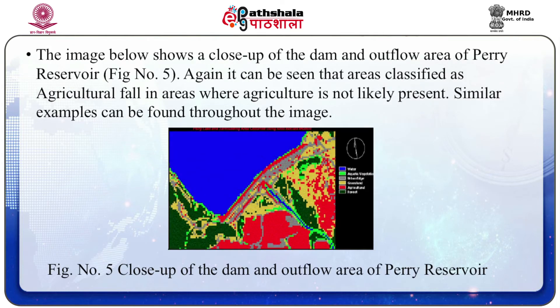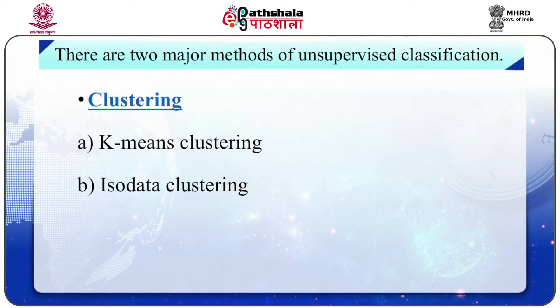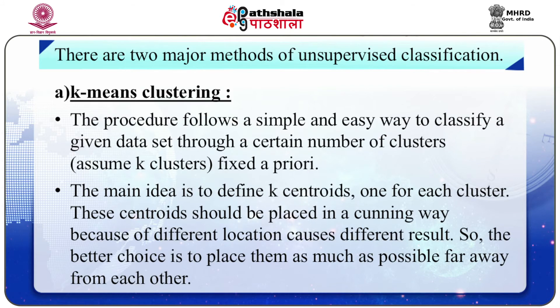The image below shows a close-up of the dam and outflow area of the Perry Reservoir in figure number 5. It can be seen that areas classified as agriculture fall in areas where agriculture is not likely present; similar examples can be found throughout the image. There are two main methods of unsupervised classification: clustering, which includes k-means clustering and ISODATA clustering. We will first discuss k-means clustering.